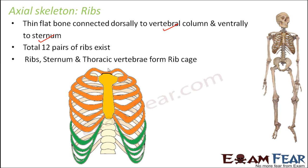The ribs, sternum, and thoracic vertebrae together form the rib cage. Just like how animals are enclosed in a cage, these ribs form a cage-like structure inside which all the delicate organs are located. The rib cage is supported by the sternum on the front side and the thoracic vertebrae on the back side.